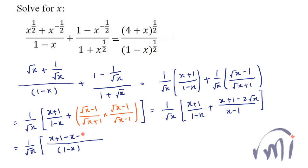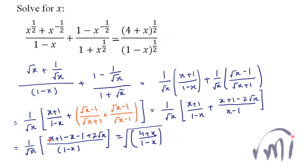So this can be written as 1 divided by square root of x, multiplied by 1 minus x. We have x plus 1, and then a minus sign because I've taken minus common, so all signs in the numerator change: minus x minus 1 plus 2 root x. This was equal to 4 plus x divided by 1 minus x to the power 1/2. So this x cancels minus x, plus 1 cancels minus 1, and root x cancels root x, and from here we get 2 divided by 1 minus x equals square root of 4 plus x divided by 1 minus x.